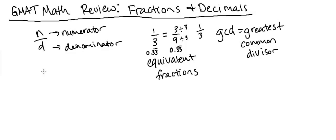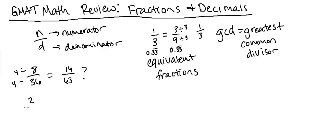Let me give you one more example. If I give you the fraction eight over 36 and ask if it equals 14 over 63, the first thing I'd do is reduce both fractions. For the left-hand side, the greatest common divisor is four. Dividing the top and bottom by four gives us two ninths, and we notice we cannot further simplify this.